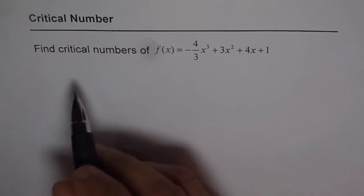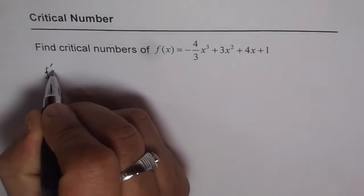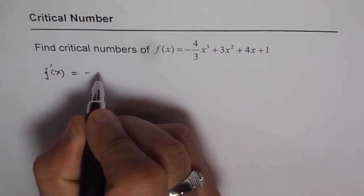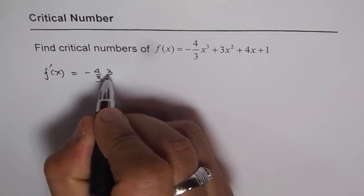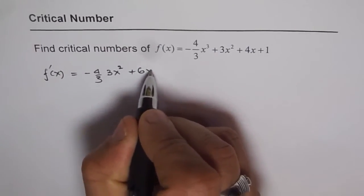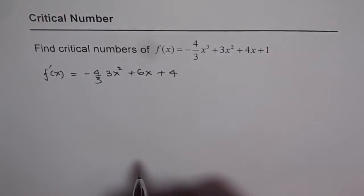So to find the critical numbers, let's find the derivative of the function. Given f(x), let's find f'(x). That will be -4/3 times 3x² plus 6x plus 4. So that is the derivative of the given function.